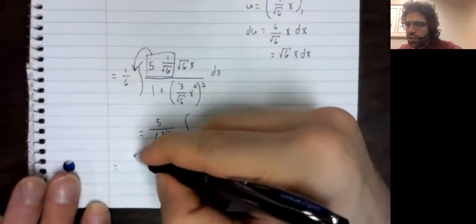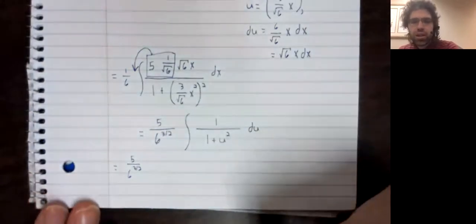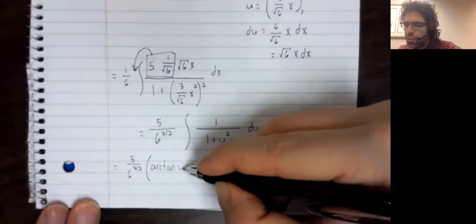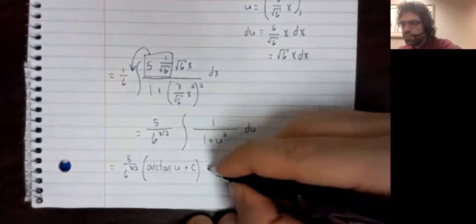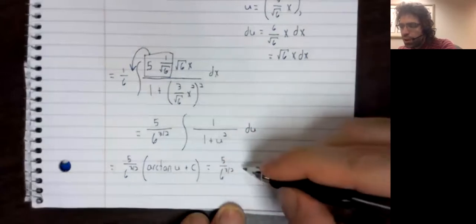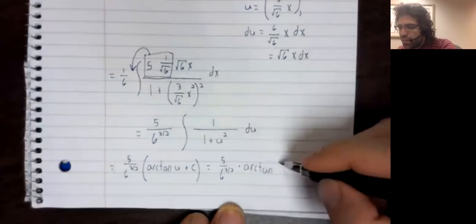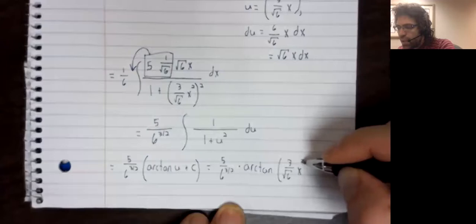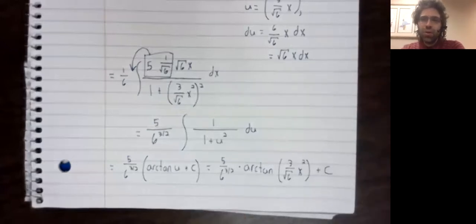And we're basically done. This is the arctangent, the arctangent of u plus a constant. And with this very last step, we'll no longer basically be done, we'll just be done. Get rid of that u and rewrite this in terms of x.